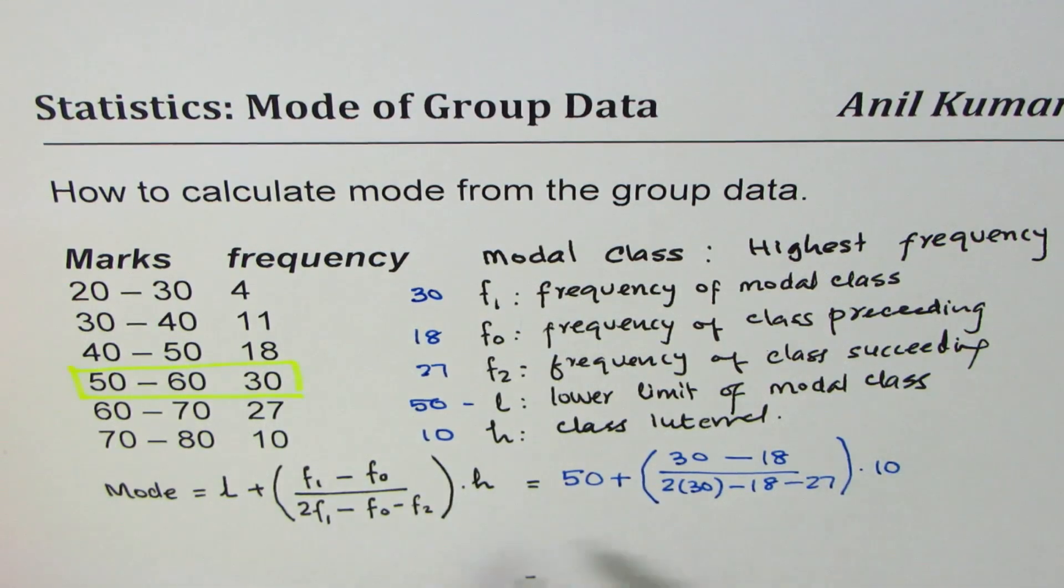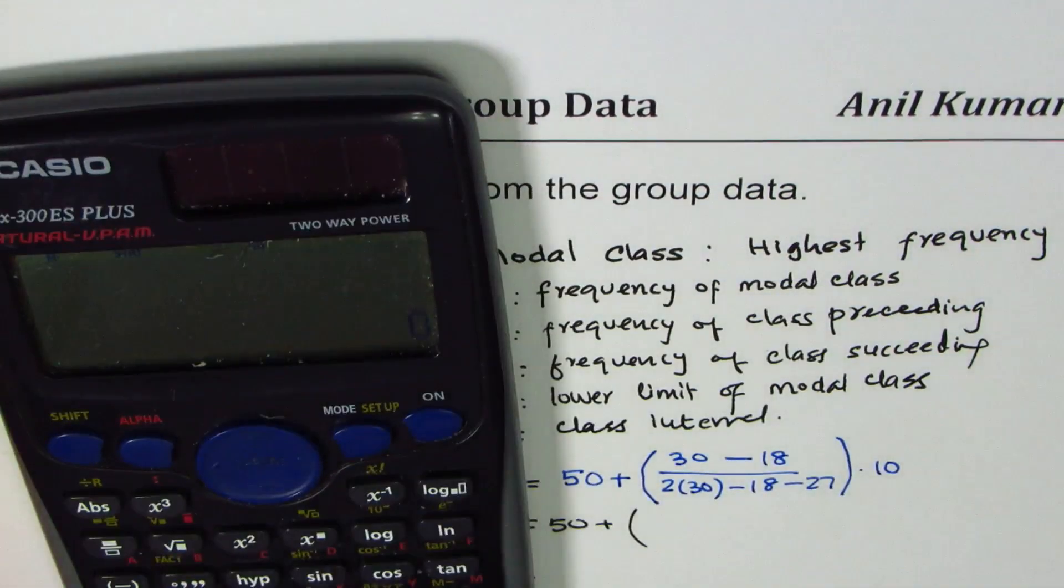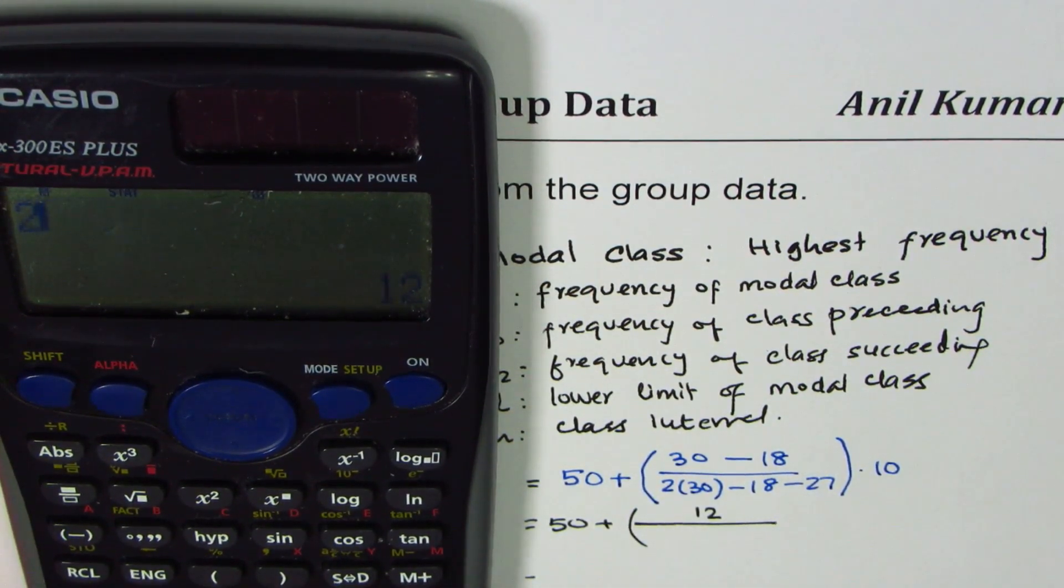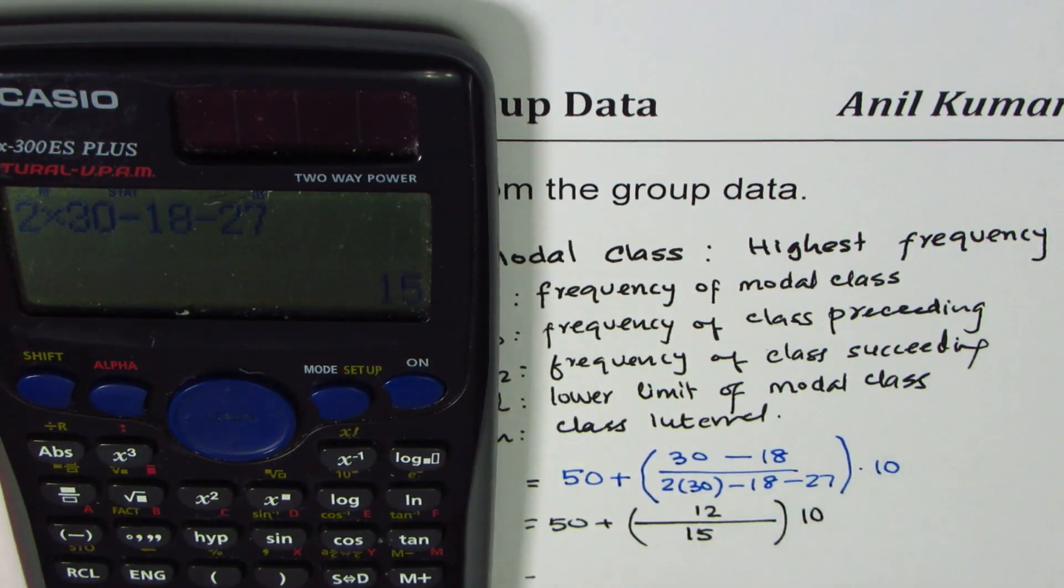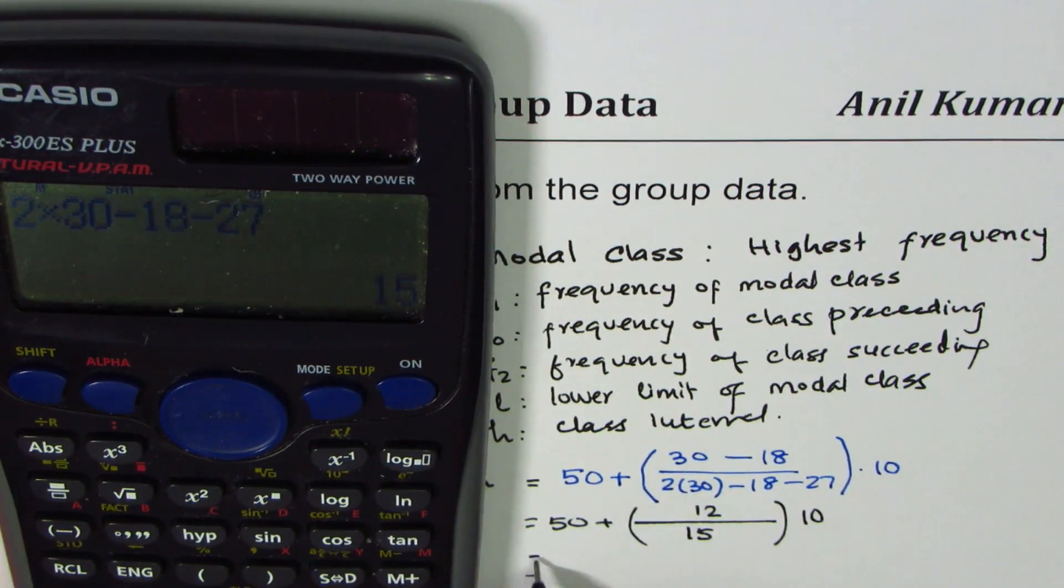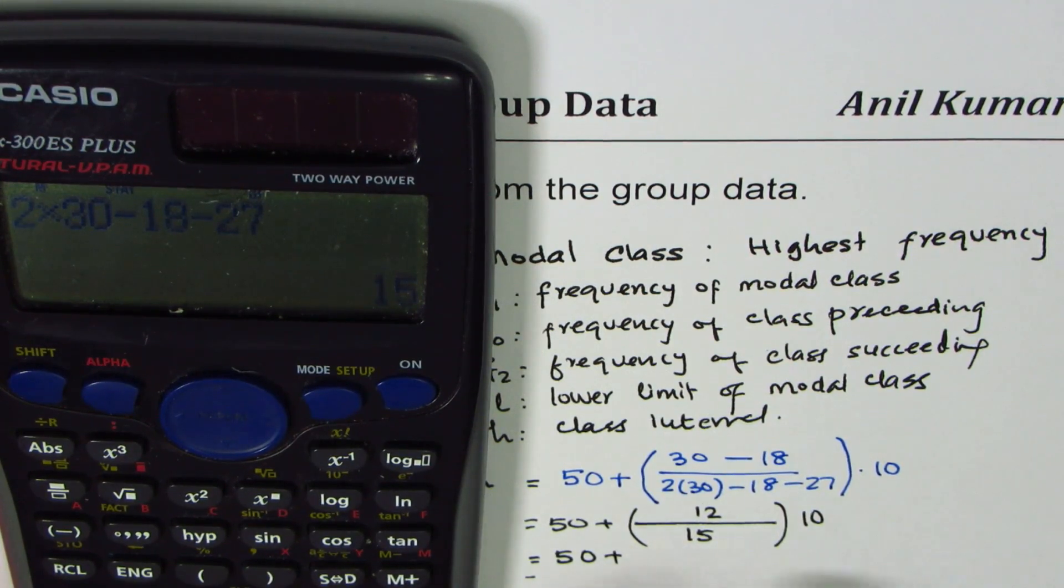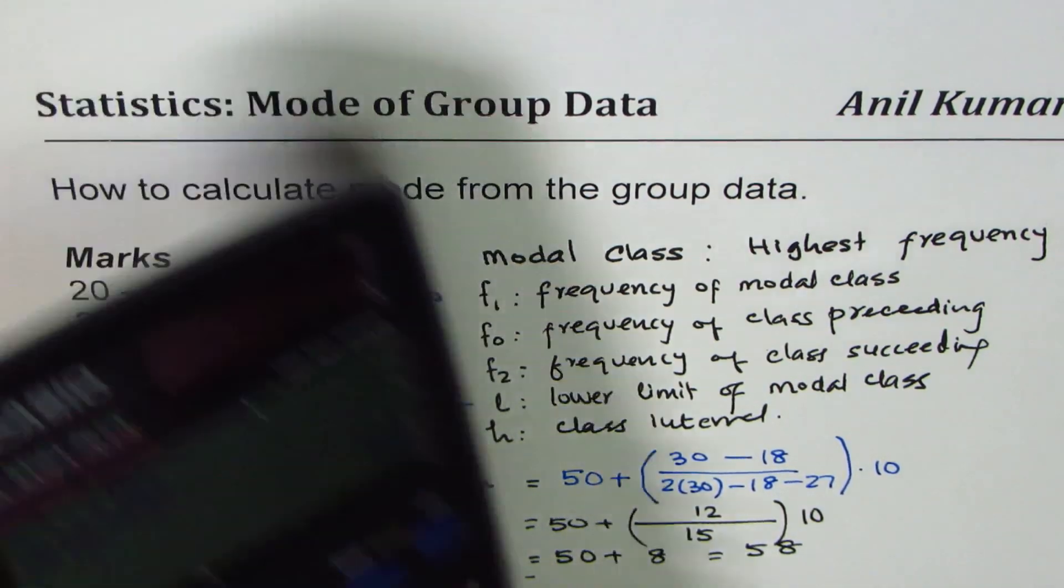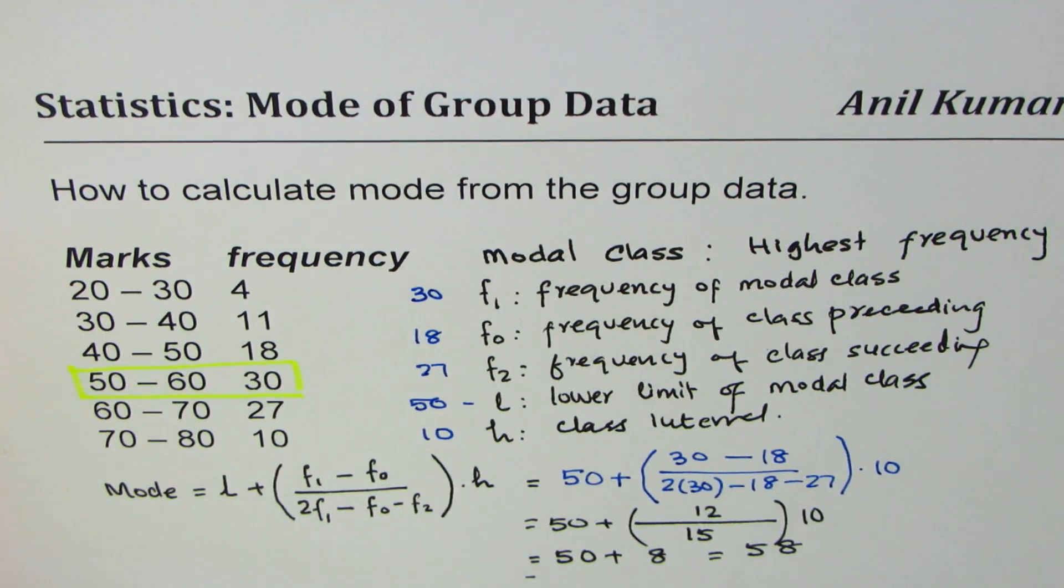So that should give you the answer which is, let's write down 50 plus, using the calculator: 30 minus 18 equals 12, divided by 2 times 30 take away 18 take away 27 that gives us 15, times 10. So that gives us 50 plus 120 divided by 15, which equals 50 plus 8, and that gives us 58.